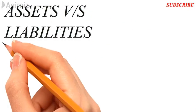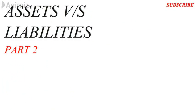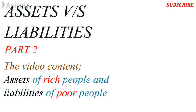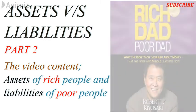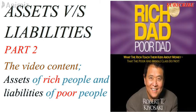In our last video, we found out the differences between asset and liability. But in this second part we are going to learn about the assets of rich people and liabilities of poor people. This is the summary of Rich Dad Poor Dad book by Robert Kiyosaki.